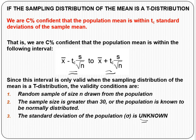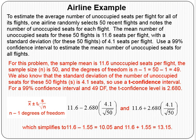Let's take a look at a particular problem: estimating the number of unoccupied seats on flights. To estimate the number of unoccupied seats per flight, one airline randomly selects 50 flights and notes the number of unoccupied seats on each flight. The mean number of unoccupied seats on these 50 flights is 11.6 — that is your x-bar. The sample size n is 50, with a standard deviation of 4.1 for those 50 flights — that is your s.